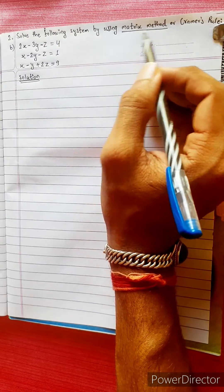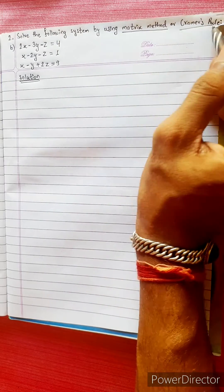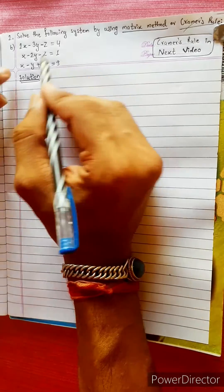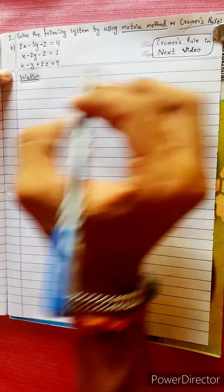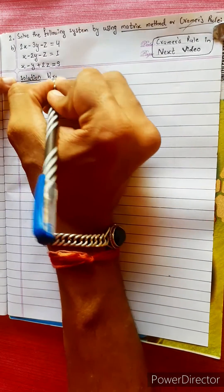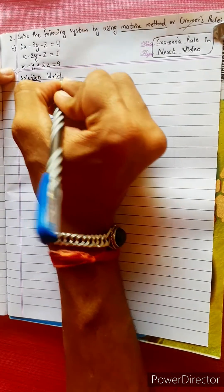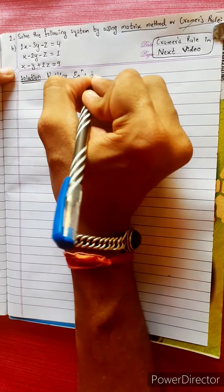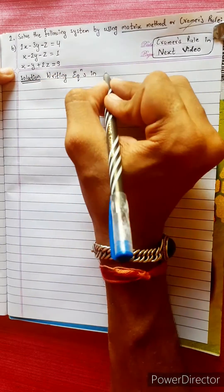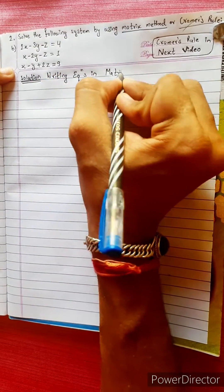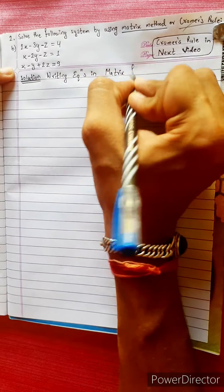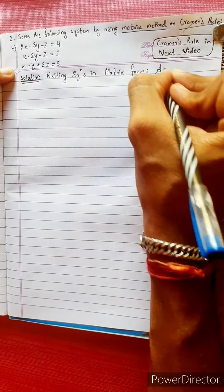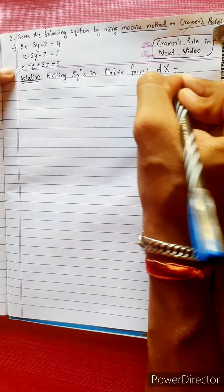Solve the following system by using the matrix method or Cramer's rule. Cramer's rule is covered in another video. Now this is called writing the given equations in matrix form. The matrix form is A into x equals to C.